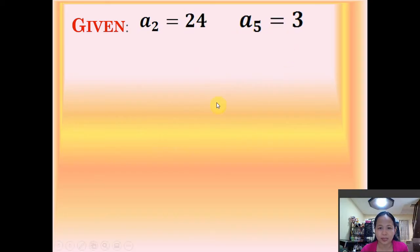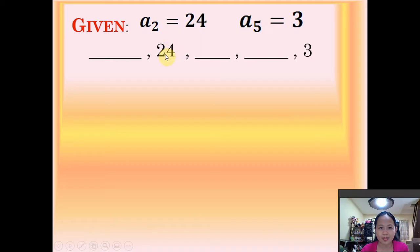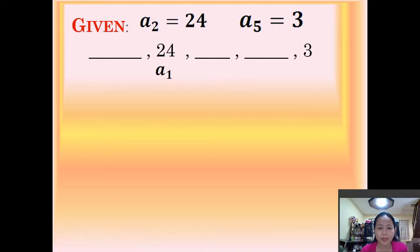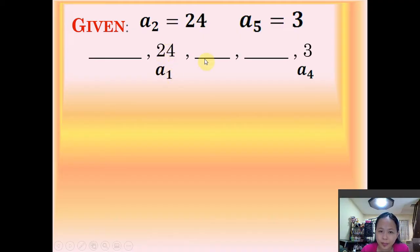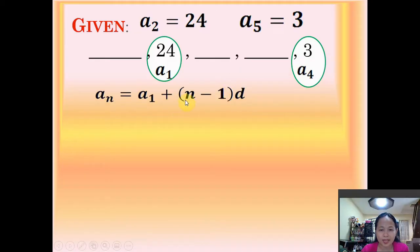The second term is 24 and the fifth term is 3. Writing out the sequence, we don't have the first term so we represent that as blank, followed by the second term which is 24, then blanks for the third and fourth terms, and the fifth term is 3. To solve this problem, we are going to use 24 as our temporary first term. So this second term becomes our temporary first term, followed by temporary second, third, and fourth terms, so that we can apply the n-th term formula.